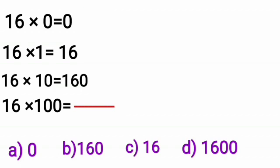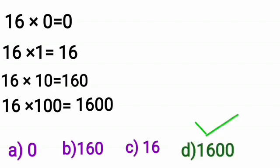Here, 16 zeros are 0. This is option A. 16 ones are 16. This is option C. 16 tens are 160. This is option B. So, 16 hundreds are 1,600. So, children, in this question, the correct answer is option D.